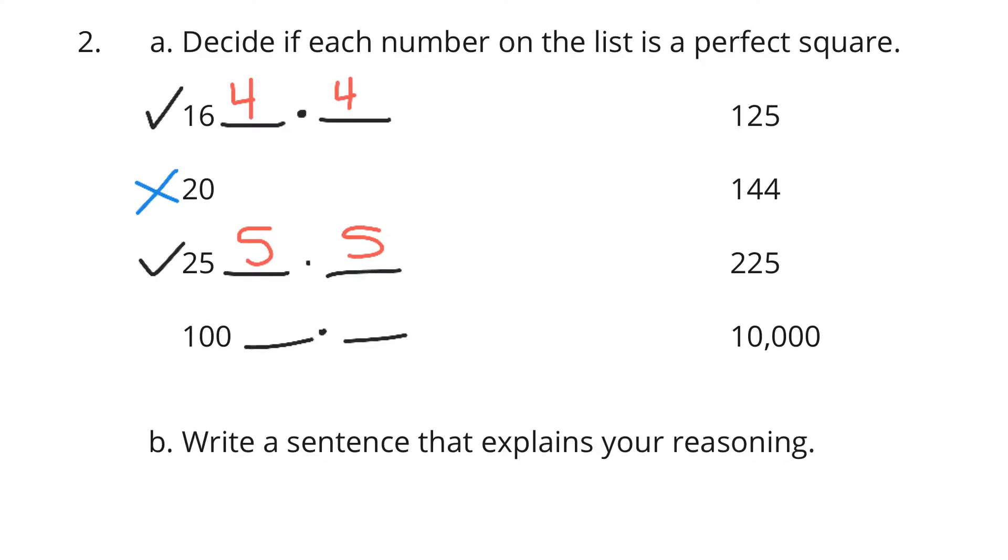What about 100? Is there a number multiplied by itself that gets to 100? Yes, that is 10. 10 times 10 is equal to 100. 144, well, that's going to be 12 times 12, so that works. Which makes us think, oh, 125, the only other number left between 10 and 12 is 11. But 11 times 11 is 121, so 125 is not a perfect square.